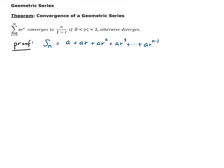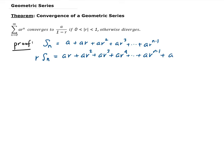Since we're starting from 0, we can stop at N minus 1. Now what we can do is take R and multiply by the partial sums. That's going to give us A times R plus A times R squared plus A times R cubed plus A times R to the fourth, and at the end we'll get A times R to the N minus 1, and the last term A times R to the N minus 1 times R gives us A times R to the N.